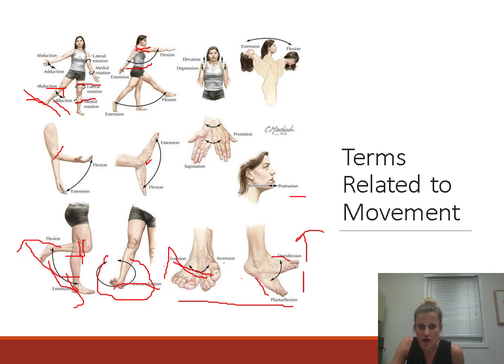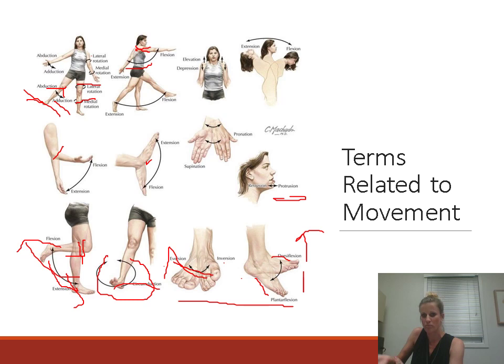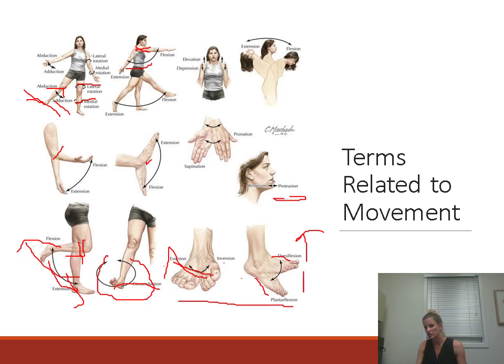Protraction and retraction: you see the jaw protracting and retracting — push your jaw out is protraction, pull it in is retraction. Finally, supination and pronation: when the palm is forward, that's supination. When you twist the palm backwards, that's pronation. Think of laying down: supine means belly up — the belly of the hand is up. Prone means belly down — the belly of the hand goes down. So supination, pronation.